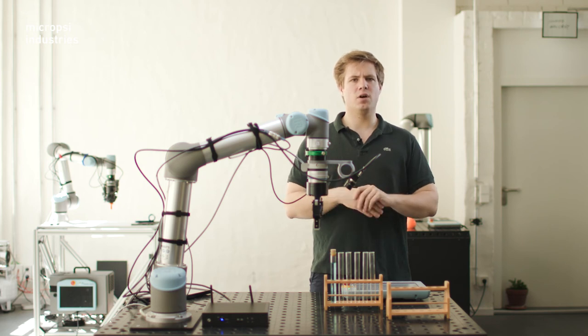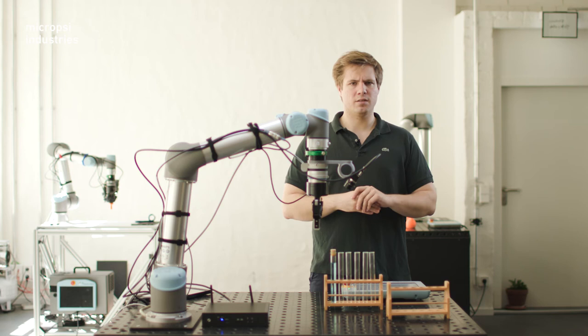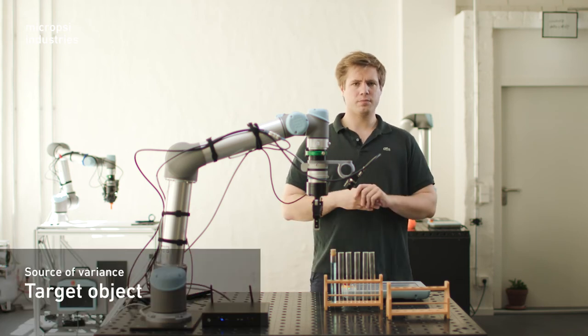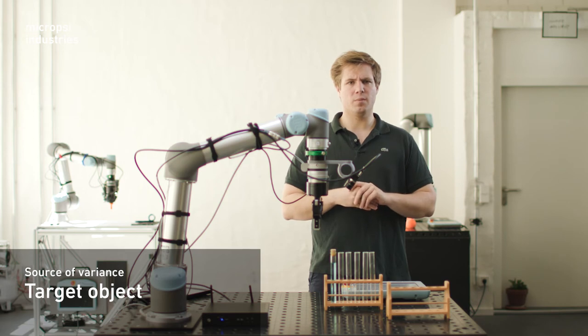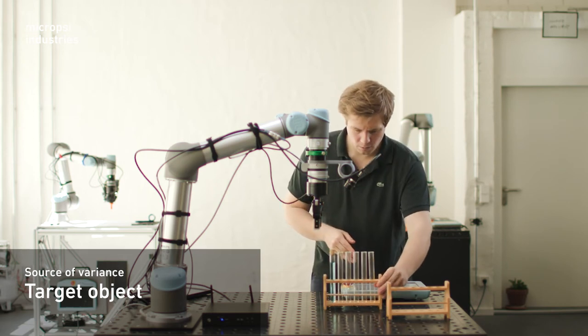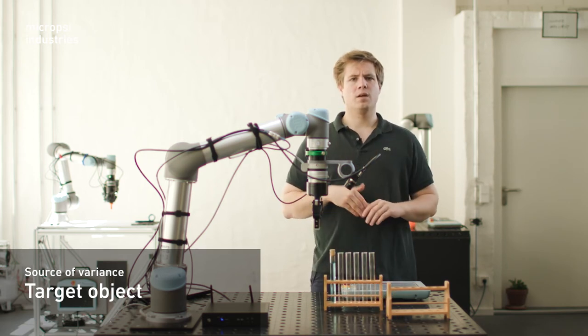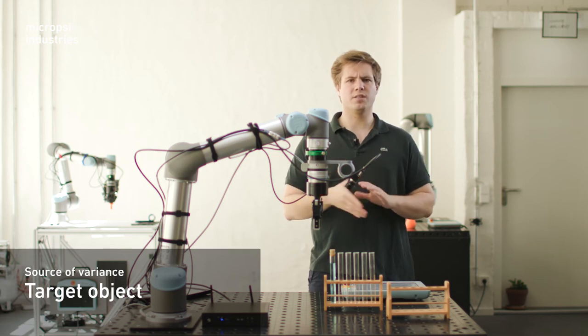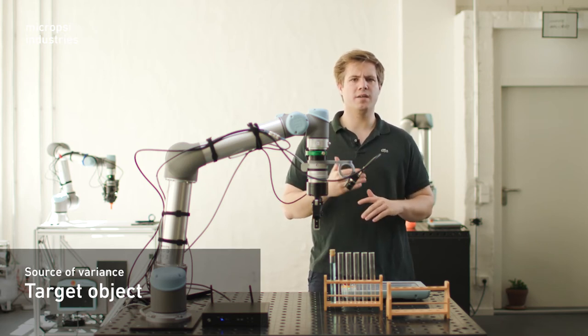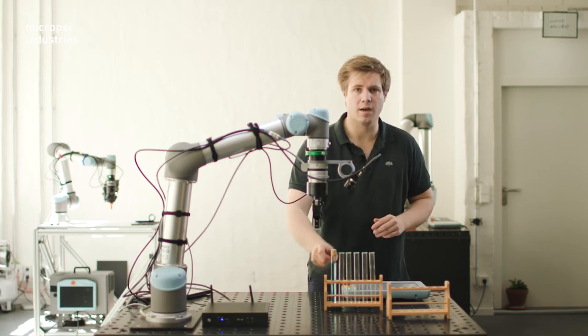A typical source of variance is the target object, like these beakers. How might the target object change every time the robot approaches? Are the target objects always the same or do they differ in size, shape or in this case, color?